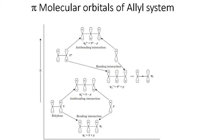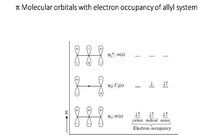In the allyl system there are two ions and one radical: the allyl anion, allyl cation, and allyl radical. In the allyl anion, there are 4 pi electrons; psi 1 and psi 2 are each occupied by 2 electrons, so psi 2 is HOMO and psi 3 is LUMO, giving ground state frontier molecular orbitals psi 2 and psi 3. In the allyl cation, there are only 2 pi electrons, both in psi 1; therefore psi 1 is HOMO and psi 2 is LUMO, with frontier molecular orbitals psi 1 and psi 2.